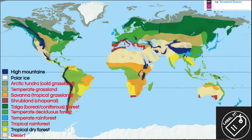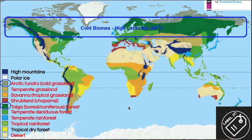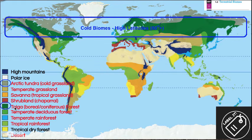Looking at our biome map, everything in red represents biomes we need to know and locate. We'll get a map in class to label them in detail. Cold biomes are at higher latitudes, 60-plus degrees — latitudes being the horizontal lines running left to right on a map. The main cold biomes are arctic tundra, sometimes called cold grassland, and the taiga biome, the boreal coniferous forest.